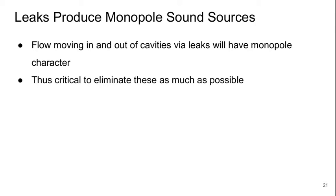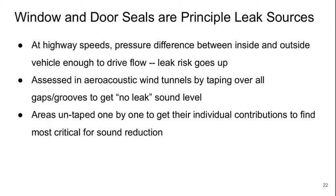As was alluded to earlier, leaks produce monopole sound sources. Flow moving in and out of a cavity via a leak will have this monopole characteristic, and since these tend to be strong even at relatively low speeds, it's critical to eliminate these as much as possible. Principal sources of these kinds of leaks are window and door seals. When driving at highway speeds, there's a pressure difference between the inside and outside of the vehicle that can be enough to drive flow, so the risk of leaks goes up.